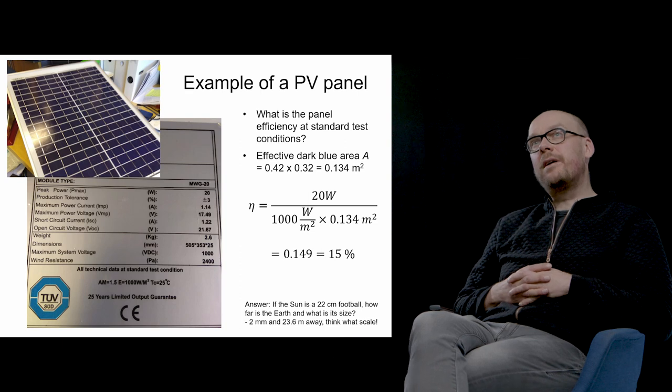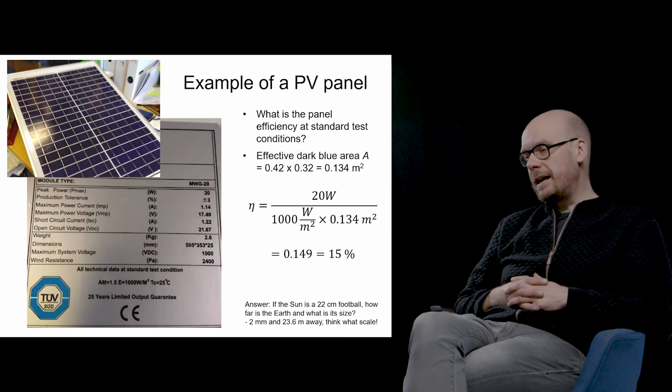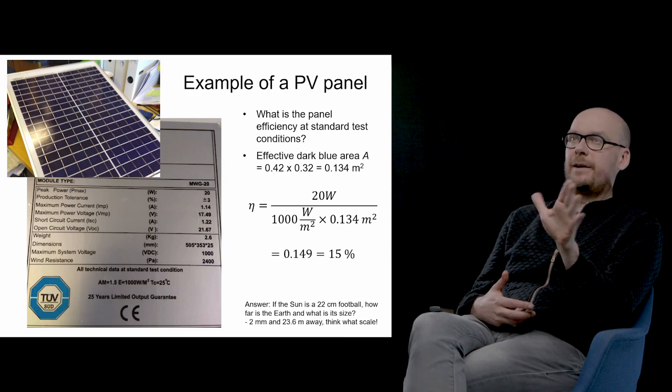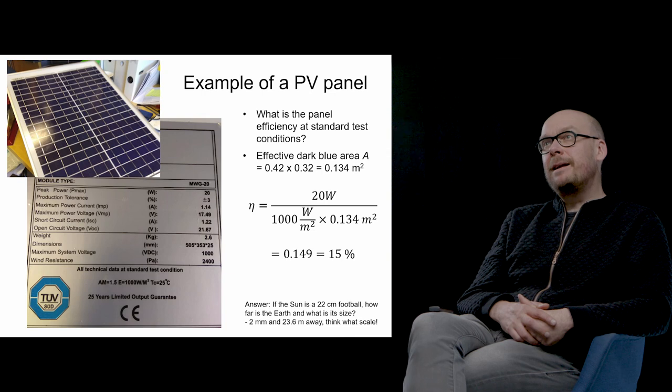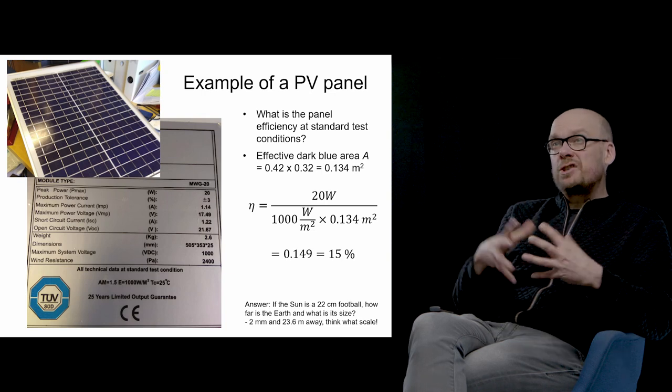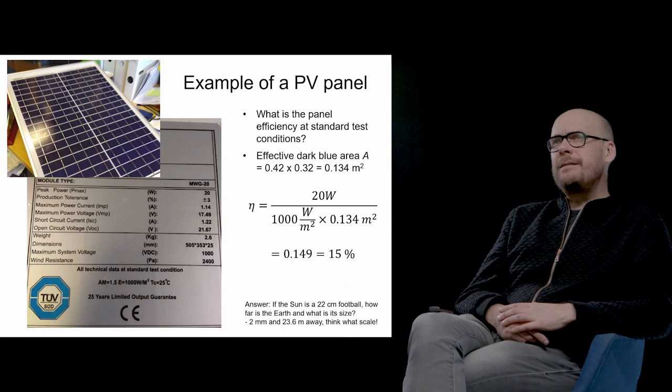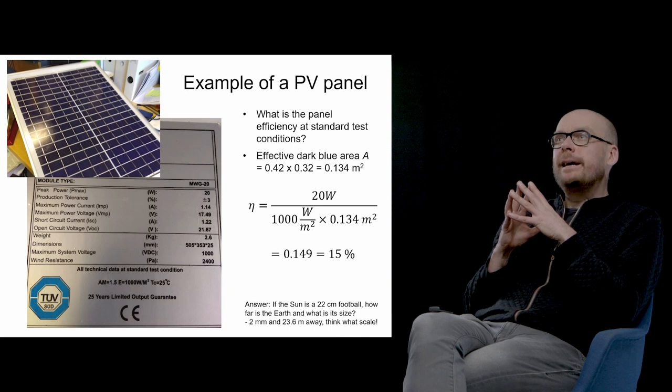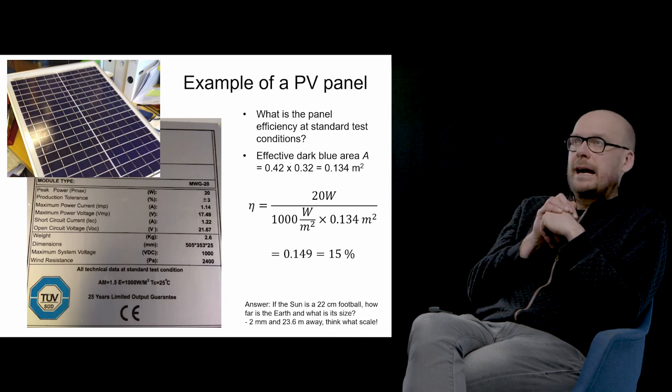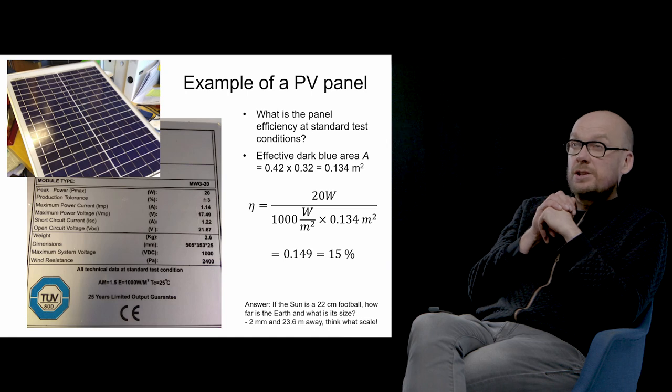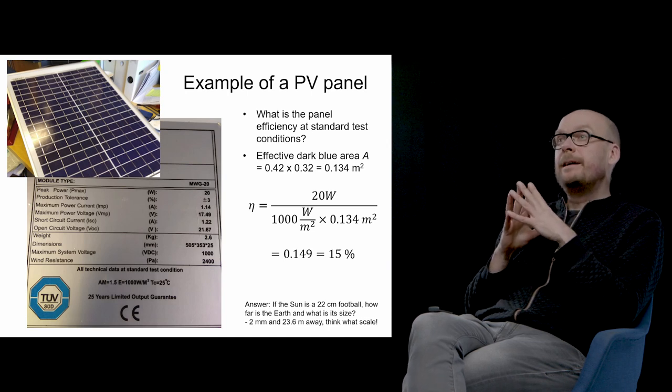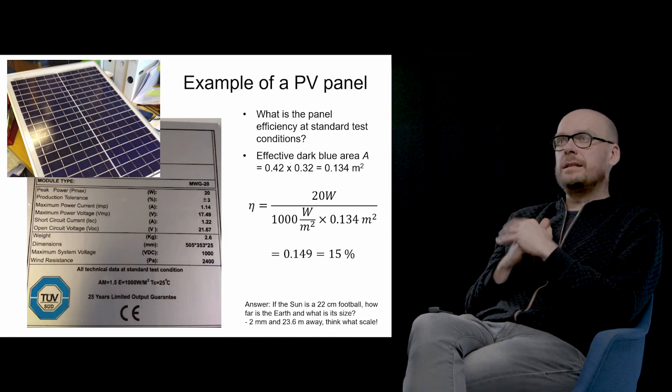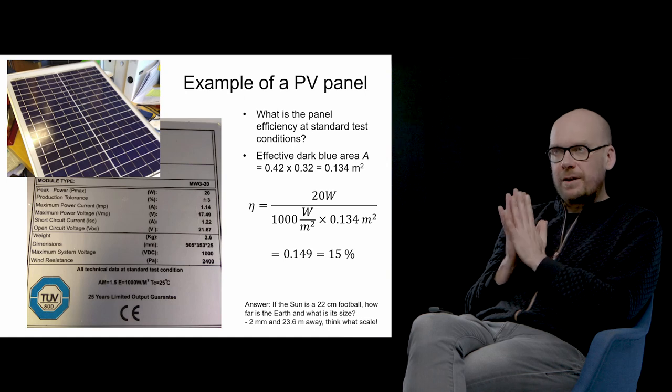This is another example of the panel that I use in teaching at Aalto University. When you turn the panel around, you see this technical label. The question is, what is the efficiency of this panel? I measure the blue dark area, that's the area of the cells. Dividing the maximum power at standard test conditions, one kilowatt per square meter, by the area gives us roughly 15% efficiency of this small panel.